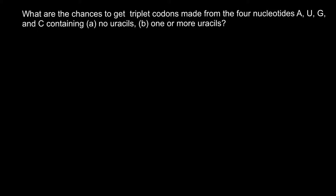First of all, let me list the four nucleotides: adenine, uracil, guanine, and cytosine. As you can see, we have uracil here, so we can find these nucleotides on the messenger RNA. If we had thymine instead, we would find such nucleotides on one of the DNA strands.